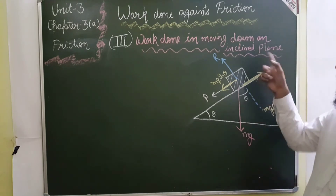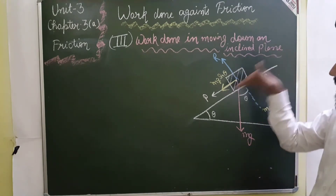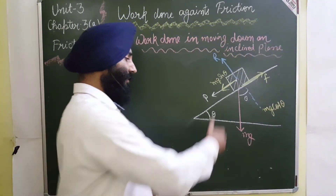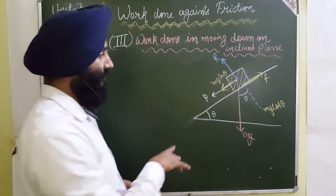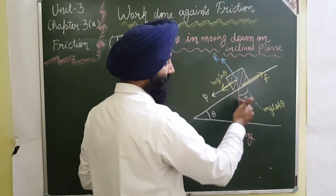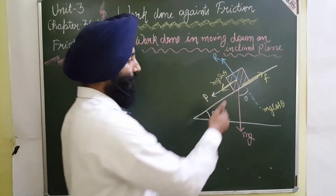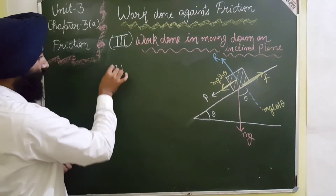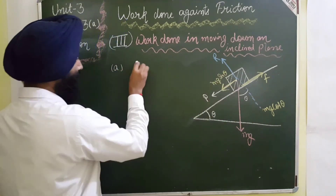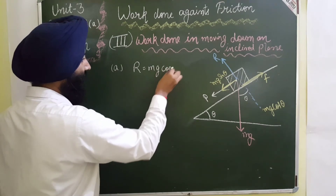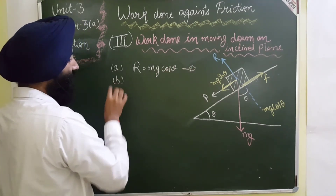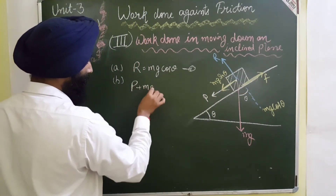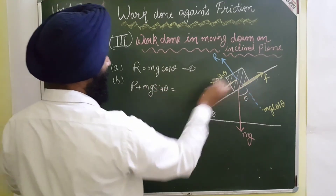In the third case, the body is moving down an inclined plane. The body moves downward with applied force P, while the opposing frictional force acts upward. Resolving Mg into components as before: Mg cos θ perpendicular to the surface and Mg sin θ along the incline. In equilibrium, R equals Mg cos θ. As the system moves downward, two forces act downward: P plus Mg sin θ, and these are balanced by the frictional force.